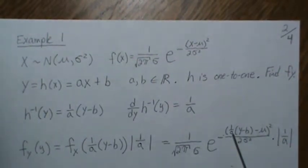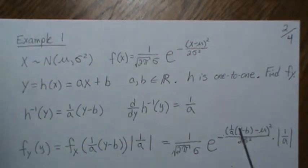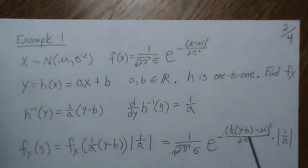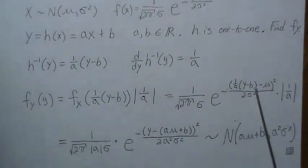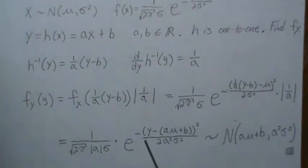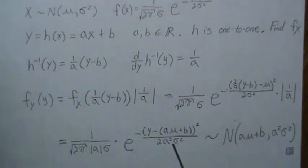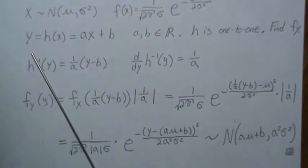We take the 1/A outside the squared term, so it becomes 1/A². To take it out of the exponent, we multiply through by A, and A squared comes down. We also substitute the minus B term accordingly. This simplifies to the density of a normal distribution with mean Aμ + B and variance A²σ². So that's the PDF of Y.